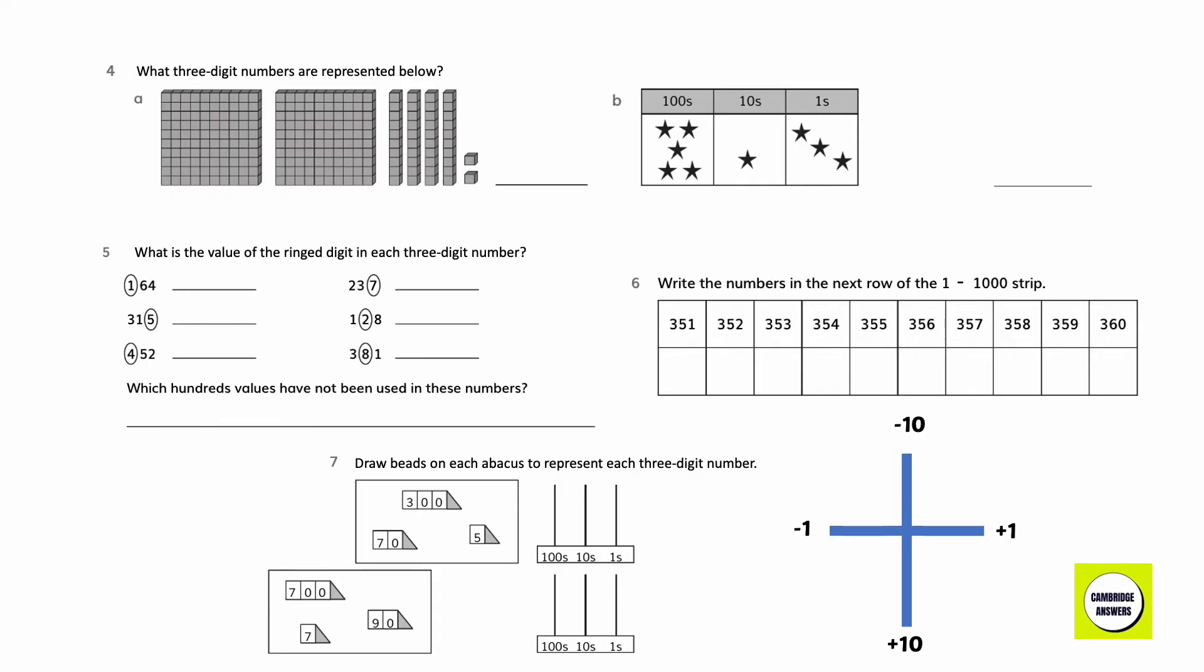What 3-digit numbers are being represented below? 200, 4 tens, 2 ones equals 242. 5 hundreds, 1 ten, 3 ones equals 513. What is the value of the ring digit in each 3-digit number? 100, 1s, 1s, 10s. Which 100 values have not been used in these numbers? 500, 600, 700, 800, 900.